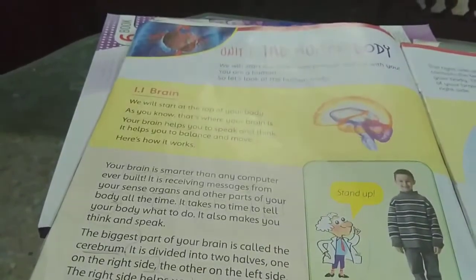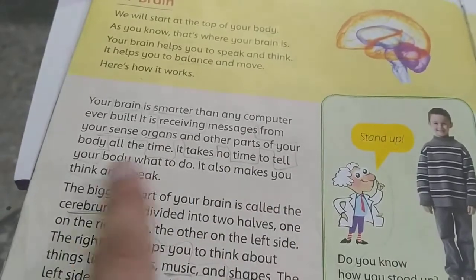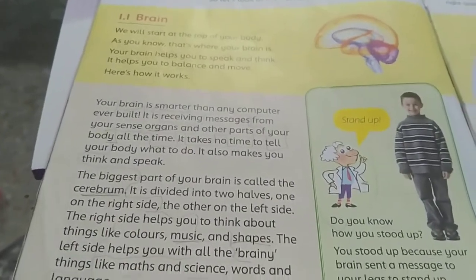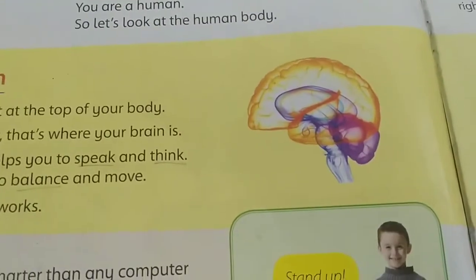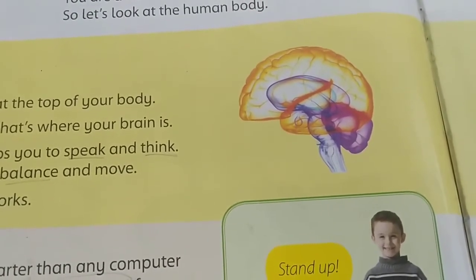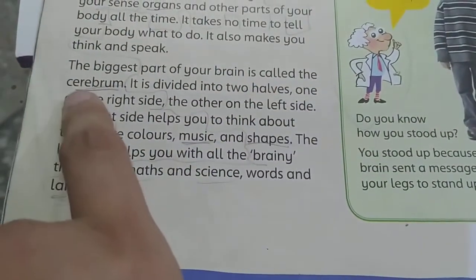It takes no time for the brain to tell your body what to do — the brain is very fast, it works at a very high speed. It also makes you think and speak. If you look at the picture of the brain, you can see that different parts are colored differently, which tells us the brain has different parts. The biggest part of your brain is called the cerebrum — C-E-R-E-B-R-U-M.